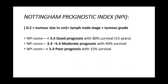The Nottingham Prognostic Index is used to assess the prognosis of breast cancer. The formula is: 0.2 × tumor size + lymph node stage + tumor grade. When the score is less than 3.4, it has a good prognosis with 80% survival at 15 years. A score of 3.4 to 5.4 gives moderate prognosis with 40% survival, and greater than 5.4 gives 15% survival.